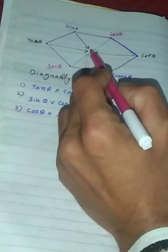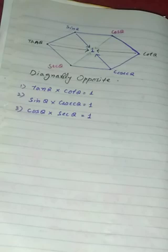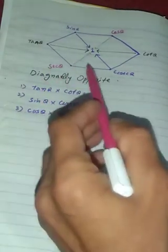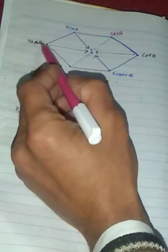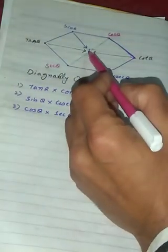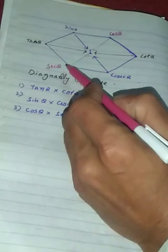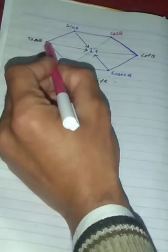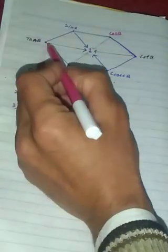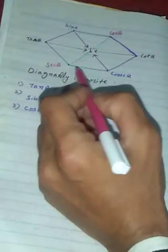I am going to write the first identity. The diagonally opposite functions are sine theta and cosine theta — their product is equal to 1. The diagonally opposite functions are tangent theta and cotangent theta. Tangent theta multiplied by cotangent theta equals 1.